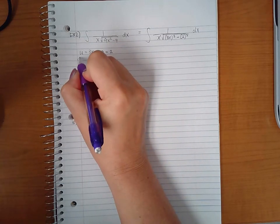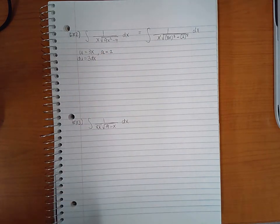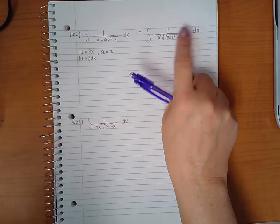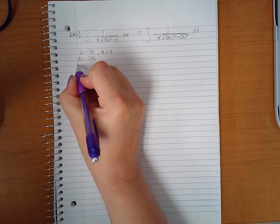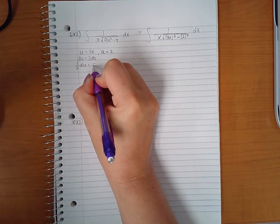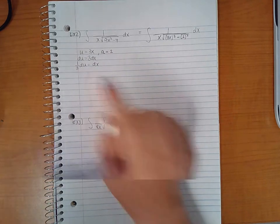And then du we can find by taking the derivative of this, which is 3dx. Now if you notice, we do not have a 3dx, we only have a 1dx. So let's multiply both sides of this equation by 1 third, and we get that the dx will be replaced with 1 third du.